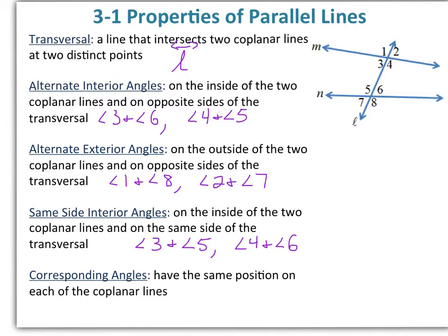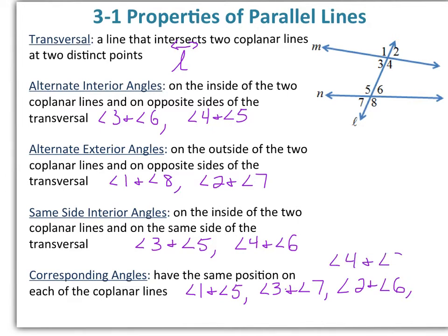Corresponding angles have the same position on each of the coplanar lines. So that would be angle 1 and angle 5 — they're both in the top left in their group — angle 2 and angle 6, and finally angle 4 and angle 8.